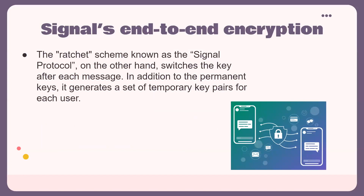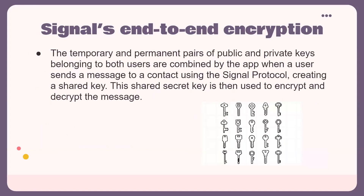The ratchet scheme known as the Signal Protocol switches the keys after each message. In addition to the permanent keys, it generates a set of temporary key pairs for each user. When a user sends a message using the Signal Protocol, the temporary and permanent pairs of public and private keys belonging to both users are combined by the app, creating a shared key. This shared secret key is used to encrypt and decrypt the message.